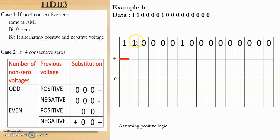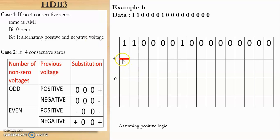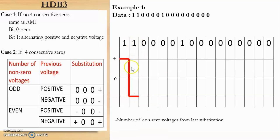The next bit is 1 again, and at this point there are no 4 consecutive zeros. We will use case 1: same as AMI, so bit 1 uses alternating positive and negative voltages. Since the previous one was positive, this next 1 will be coded as negative.